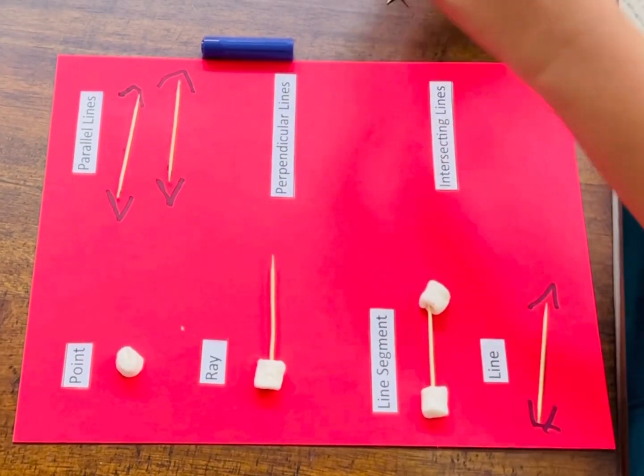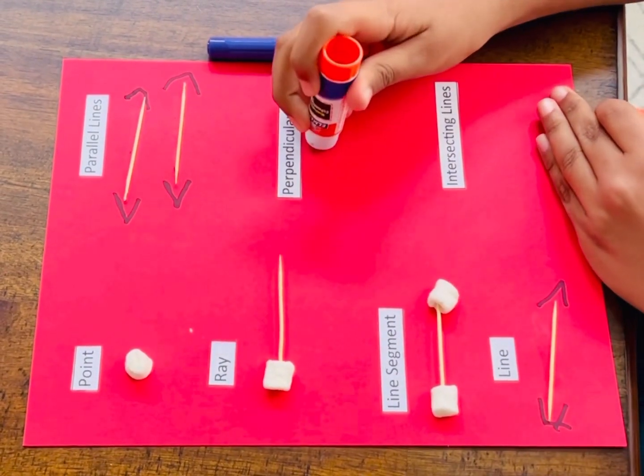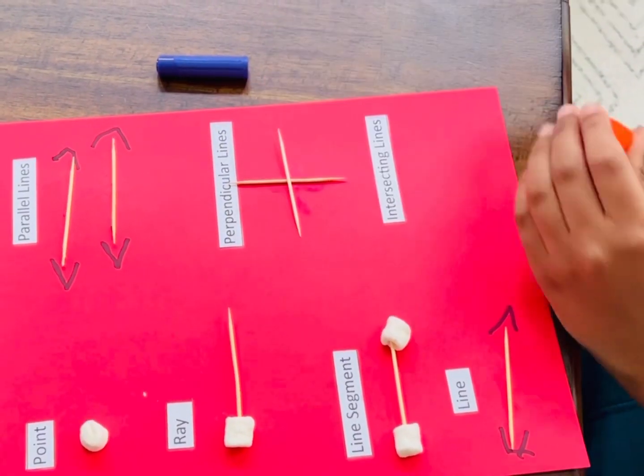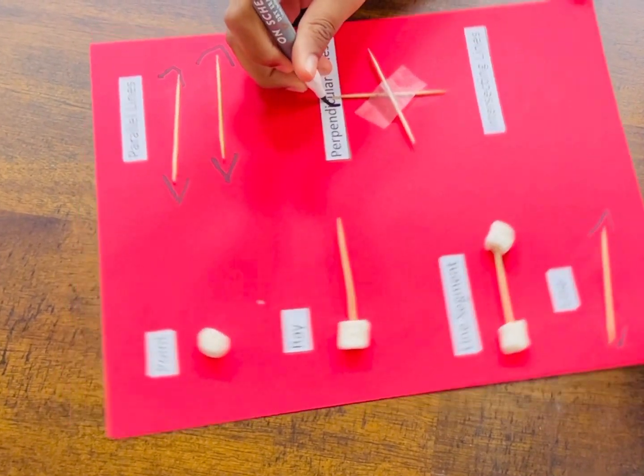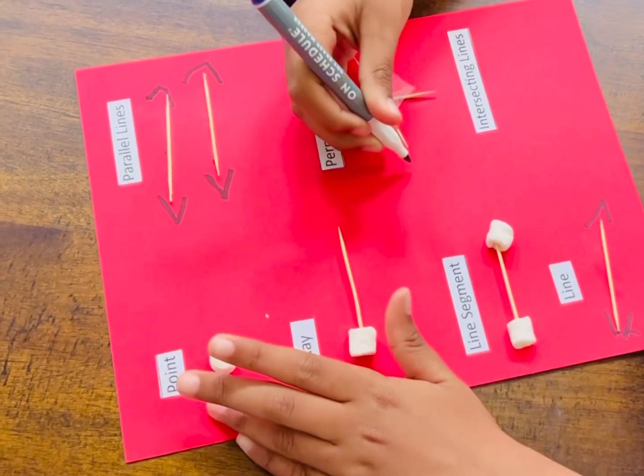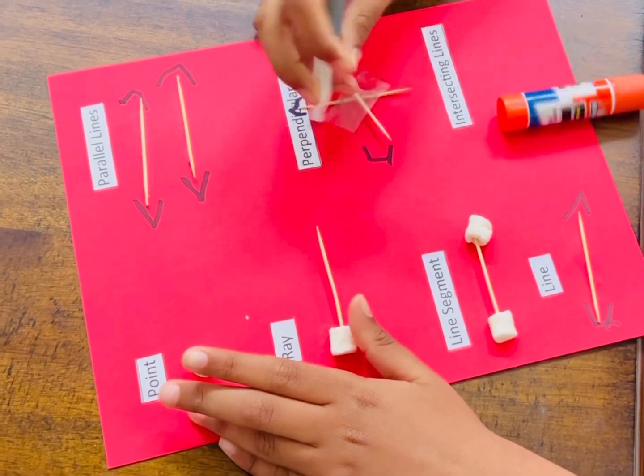So they intersect at one point. They keep on going in both directions, and we also put tape to make it stay in place.